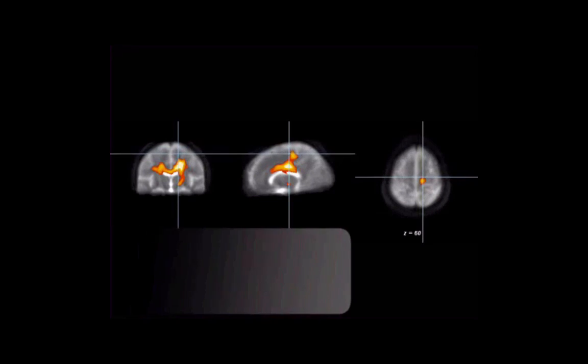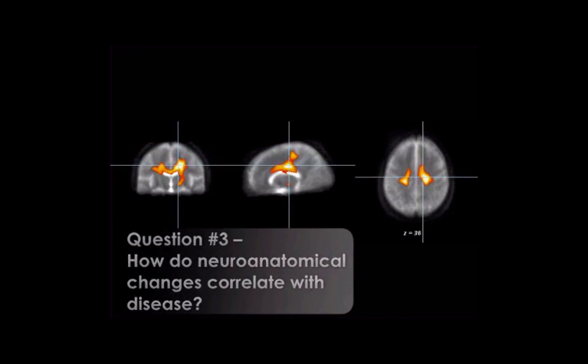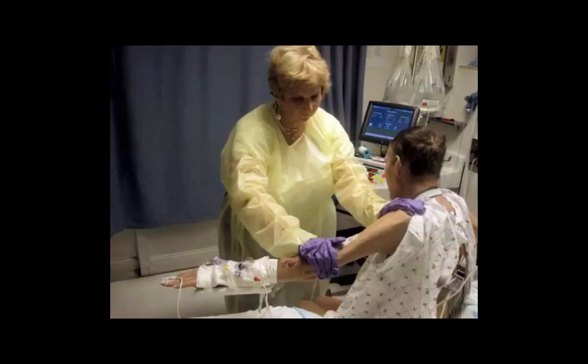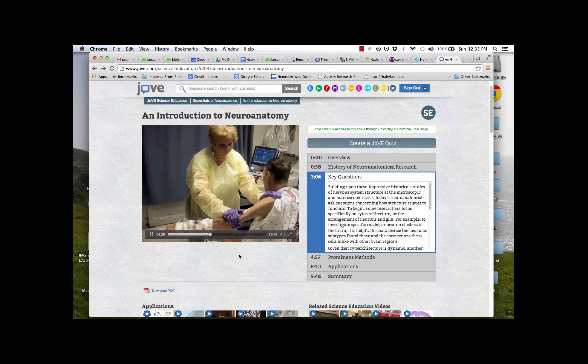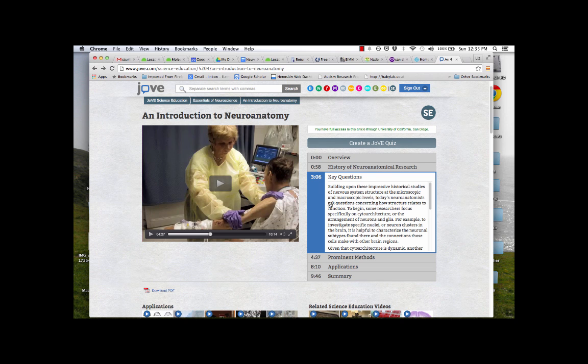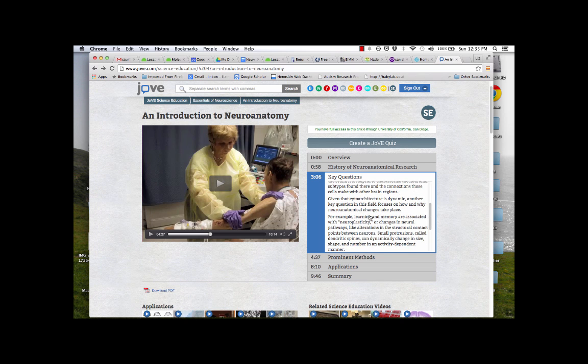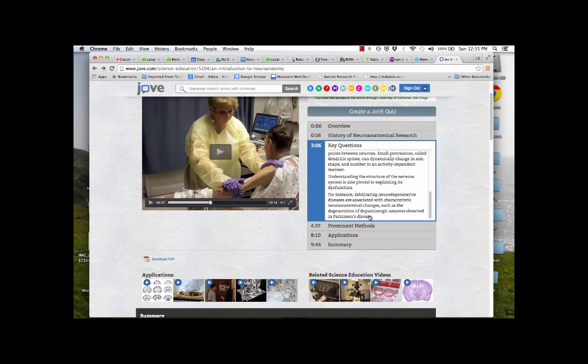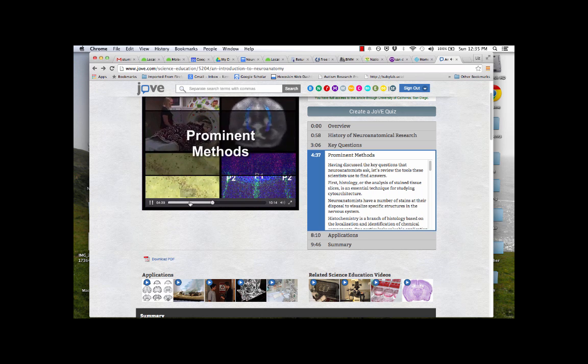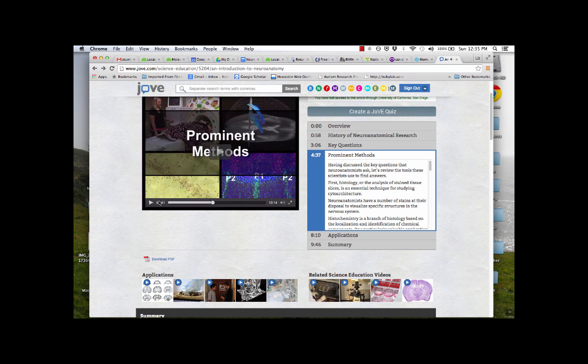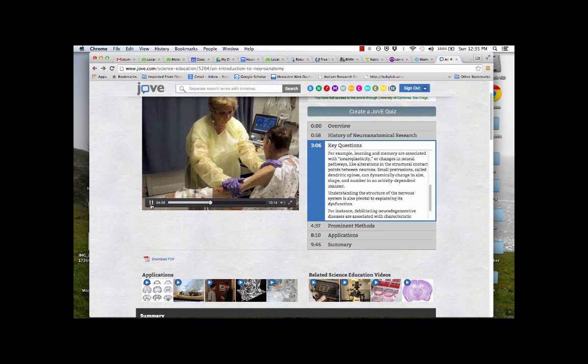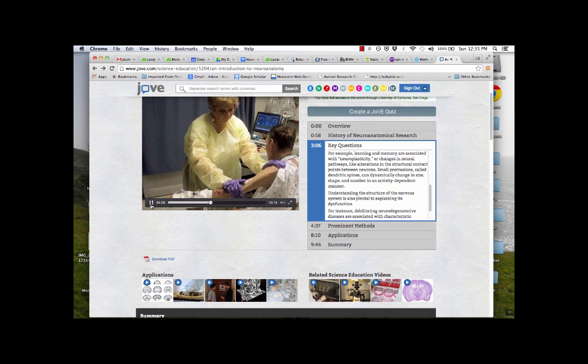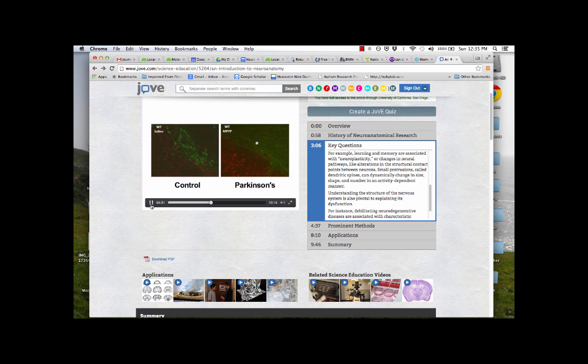Understanding the structure of the nervous system is also pivotal to explaining its dysfunction. For instance, debilitating neurodegenerative diseases are associated with neuroanatomical changes, such as the degeneration of dopaminergic neurons observed in Parkinson's disease.